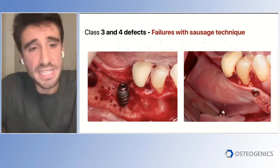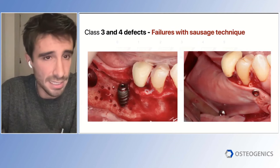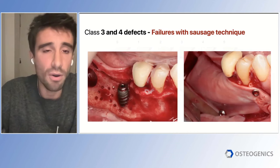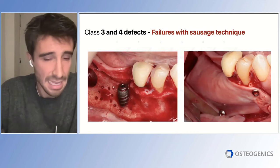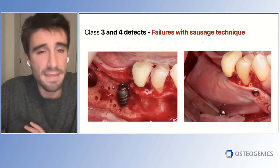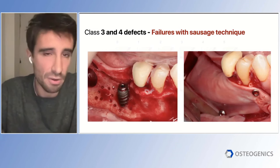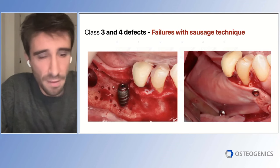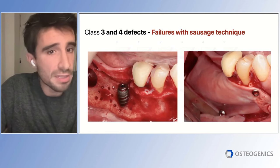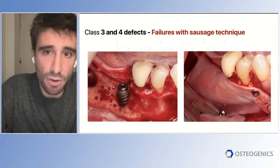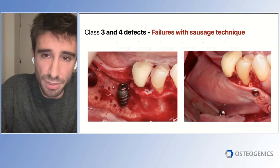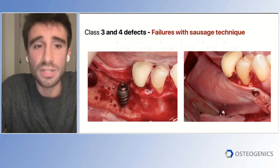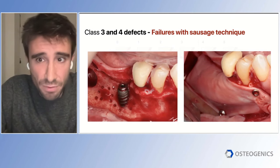Even though the sausage technique is very effective and helps achieve good results in horizontal defects, I don't think it should be used for all horizontal defects. I want to show you this case to explain why. Here we see a case of a horizontal defect in the posterior mandible — a long defect with a very poor bony housing, which is very common in the posterior mandible. We decided to follow the sausage technique, the same protocol as Istvan Urban proposed.